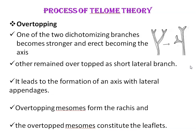The first process of telome theory is overtopping. In overtopping, one of the two dichotomizing branches becomes stronger and erect, becoming the main axis, while the other remains overtopped as a short lateral branch. This leads to the formation of an axis with lateral appendages like leaves — for example, open-veined, pinnately compound type, or firm leaves. Overtopping mesomes form the rachis, and the overtopped mesomes constitute the leaflets.